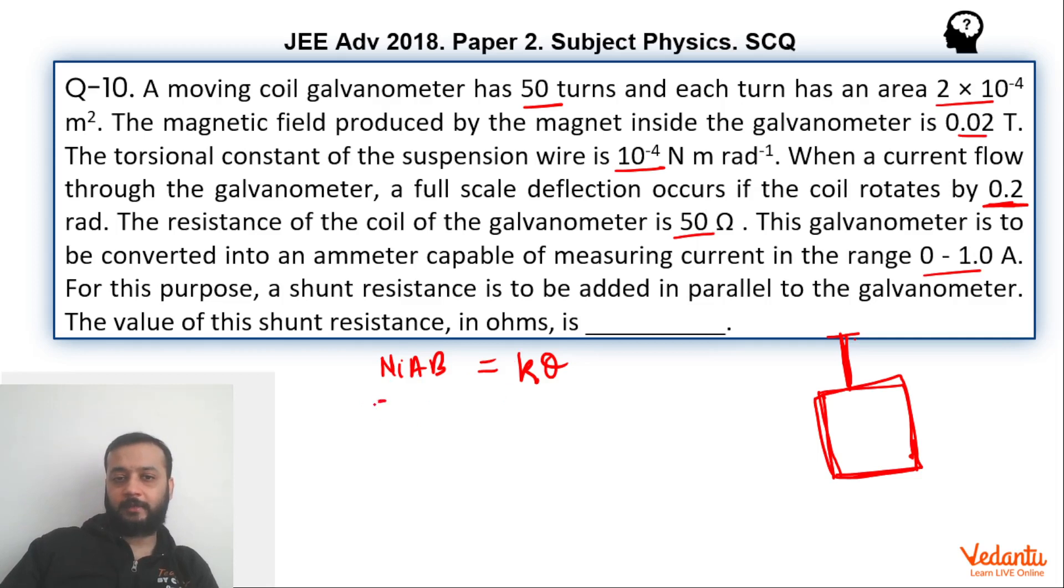N will be 50. I, we have to find. Area of cross section is 2 × 10⁻⁴. Magnetic field is 0.02, k is 10⁻⁴, and theta is 0.2.